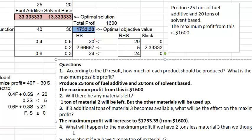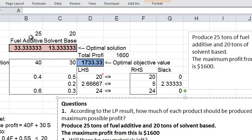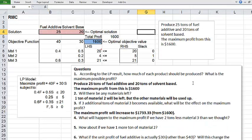Now to question 4. What will happen to the maximum profit if we have 2 tons less material 3 than we thought? 2 tons less as opposed to 3 more in question 3. Now it's actually a good practice to make a copy of the original sheet before you make the change so that you retain both the original result and the new result. Especially when you do your homework, I will ask you to show me both. What we'll do is, I'm going to change this back to the original number and solve it again to restore the original solution.